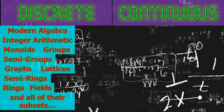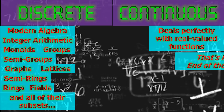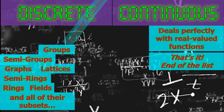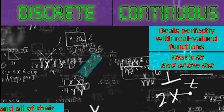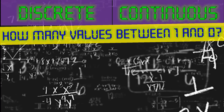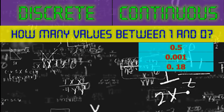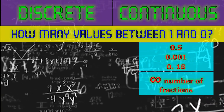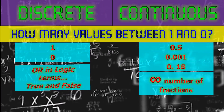While continuous math perfectly deals with real-valued functions, it mostly leaves the area of math that deals with discrete values. The simplest example to differentiate discrete structure versus continuous math is determining the values between 1 and 0. In continuous math, you'll have numbers like 0.5, 0.001, 0.18, and other infinite fractions. While in discrete math, you simply have 1 and 0, or in logic terms, true or false.